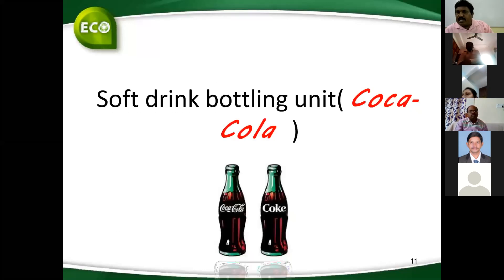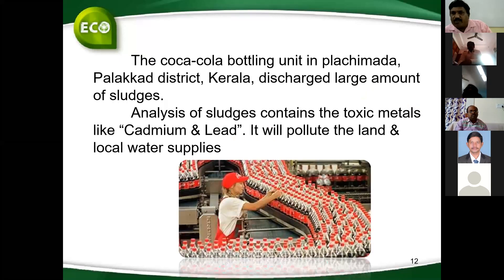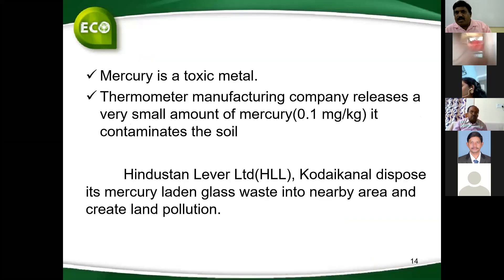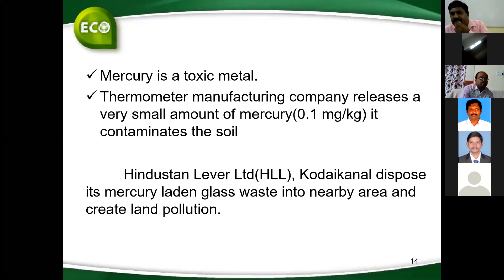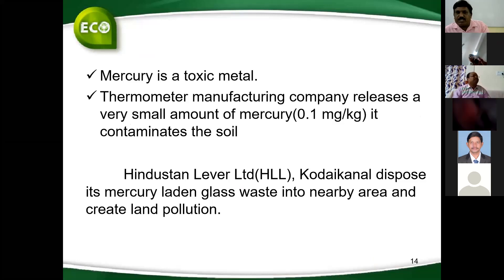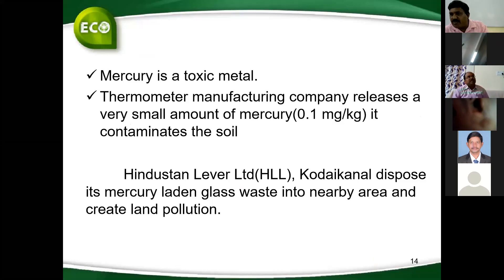The soft drink bottling unit — the Coca-Cola bottling unit in Plachimada, Kerala — discharged a large amount of sludge. Analysis showed the sludge contains toxic metals and lead, polluting the land and local water bodies. Mercury is also a toxic metal, mainly used in thermometer manufacturing. It releases very small amounts of mercury — 0.1 mg per kg — which contaminates soil. Hindustan Lever Limited disposed mercury, lead, and glass waste into nearby areas, creating land pollution.